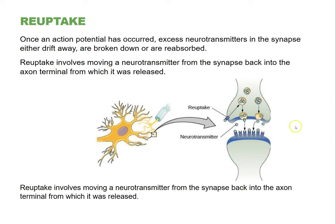After neurotransmitters are released into the gap, the ones left over are going to be recycled — a process called reuptake — back into the sending axon. Reuptake becomes really important when we talk about depression. One way depression medication can work is by blocking reuptake. For instance, drugs like Prozac or Lexapro are SSRIs — selective serotonin reuptake inhibitors. They block the recycling of serotonin. Since serotonin in key parts of the brain is involved in happiness, blocking its reuptake means more activation on the neuron, resulting in a more positive feeling and a way to combat depression.